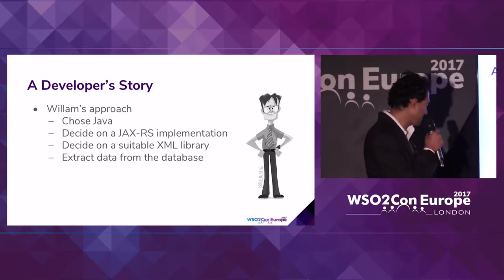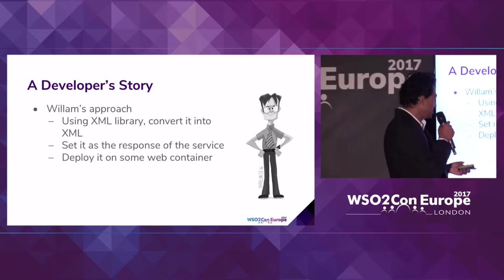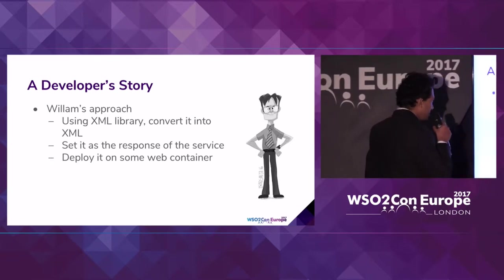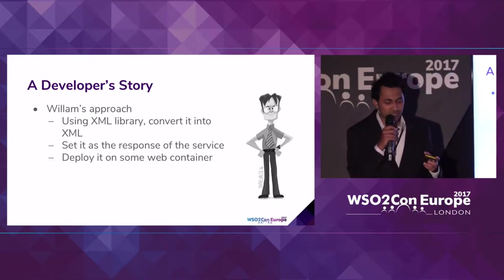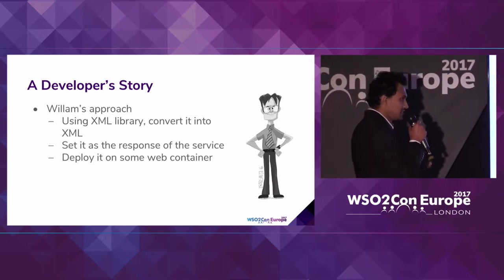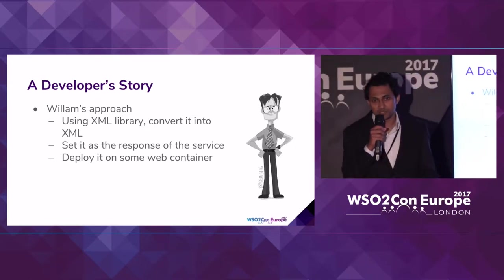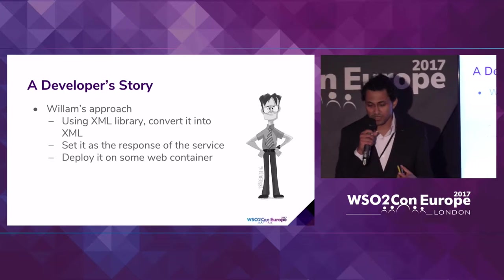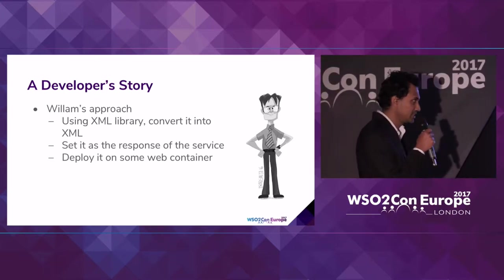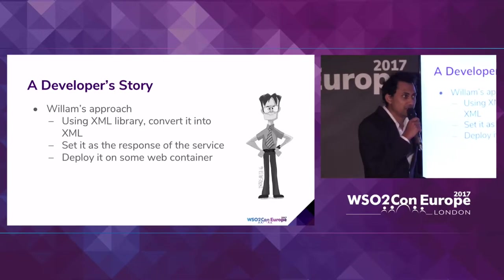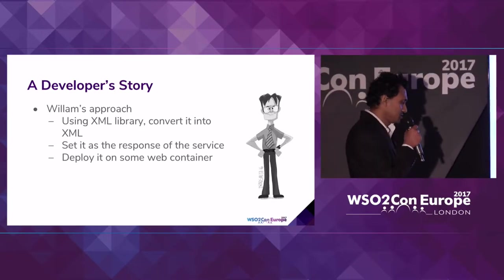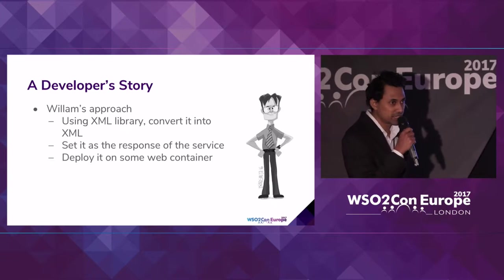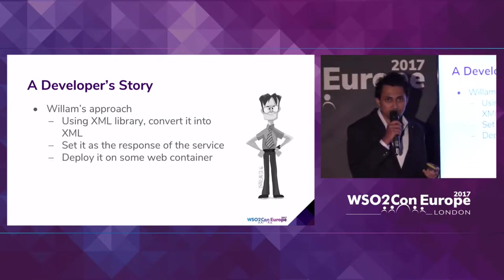First, he has to extract data from the database, and then using his XML library, convert it into some XML. Once that is done, he can set this XML as the response payload of the JAX-RS response and send it back. In addition to that, in order to make the service up and running, he needs some sort of a web container — because once you compile the JAX-RS application, you usually get a web app. So you need some container — like Tomcat, Jetty, or JBoss — in order to run this service.